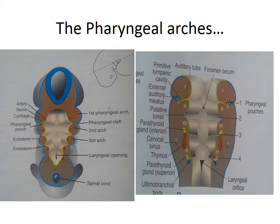All the pharyngeal pouches give rise to some very important structures of the head and neck region. As for the clefts, only the first pharyngeal cleft will take part in the formation of a definitive structure in an embryo, whereas the other three — second, third, and fourth — get obliterated.